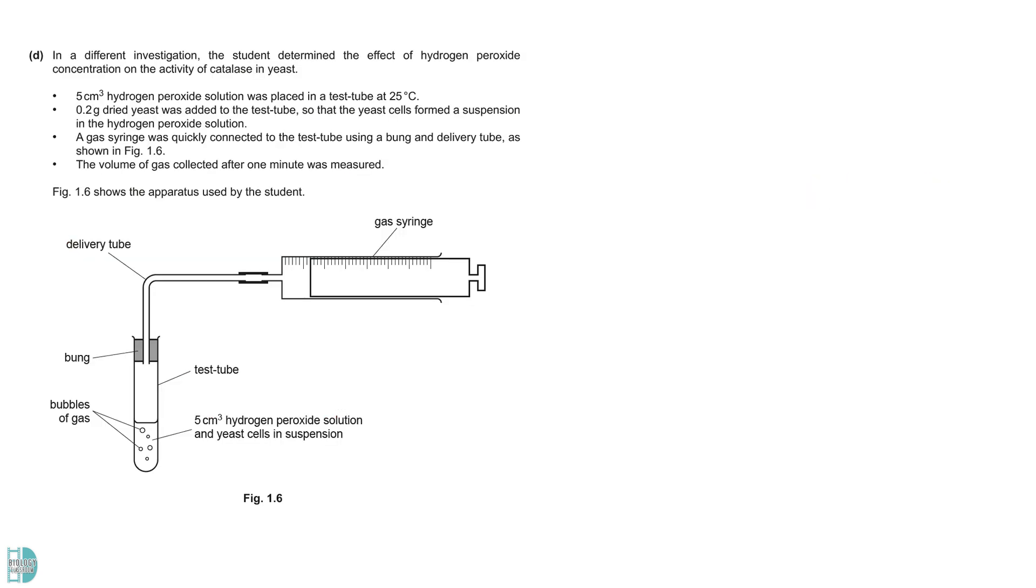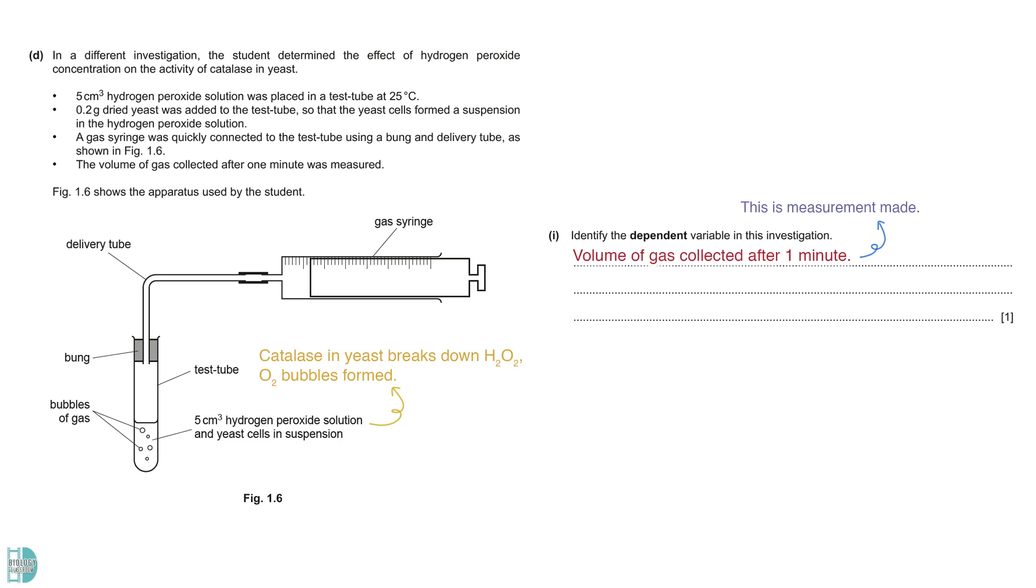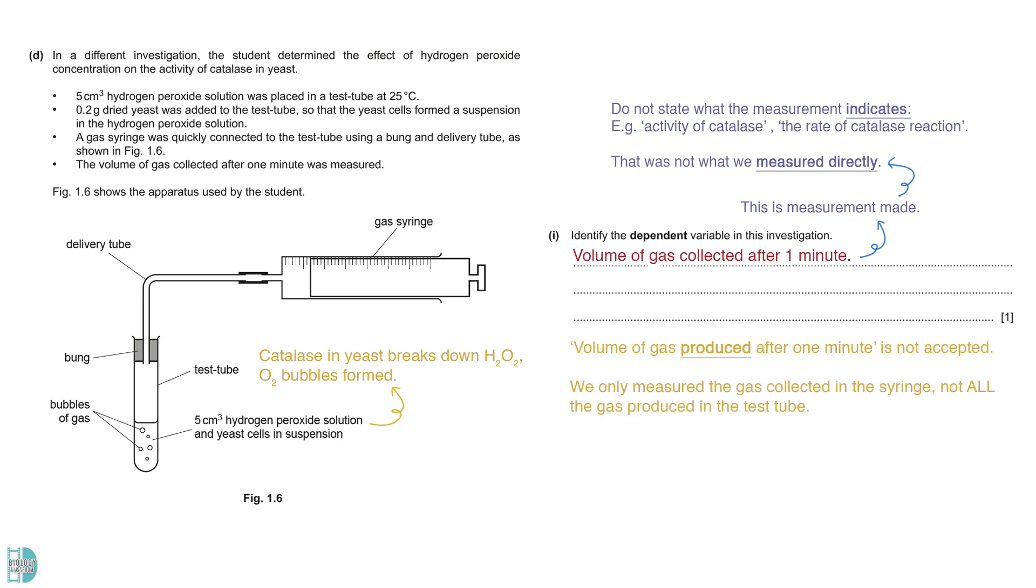Part D shows another investigation which determines the effect of hydrogen peroxide concentration on the activity of catalase in yeast. In this experiment, hydrogen peroxide and yeast suspension are mixed in a test tube. The catalase in yeast will break down hydrogen peroxide, resulting in the formation of oxygen bubbles. The dependent variable in this investigation is the volume of gas collected after one minute, as this is the measurement we take to determine the activity of catalase. Do not state what the measurement indicates, such as activity of catalase or the rate of catalase reaction, as that was not what we measured directly. Note that volume of gas produced after one minute is not accepted, as we only measured the gas collected in the syringe. We did not measure all the gas produced in the test tube.